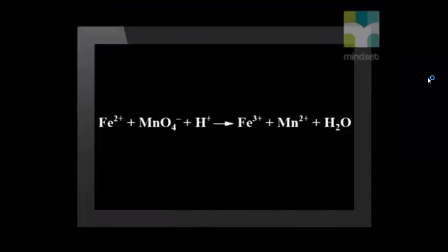Now let's write in the oxidation numbers that are missing on the product side. Again, the oxidation numbers of the iron and manganese ions are the same as the charges on these ions. Water is the only molecule that does not have oxidation numbers assigned to it. From our oxidation rules, we know that the oxidation number of hydrogen is +1, and that of oxygen is -2.